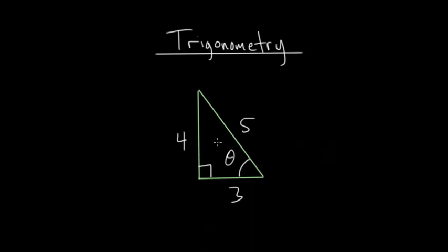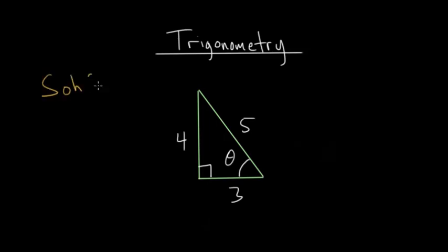In this video, I'd like to talk about how to find the angle in a triangle when you're given the different side lengths. You might recall from the last video that we essentially looked at the opposite problem, where we were given the angle and had to find one of the missing side lengths. To start a problem like this, we're going to be using trigonometry. Any time I do a trigonometry problem, I always write SOHCAHTOA at the top just to remind me what the different trigonometric ratios actually are.